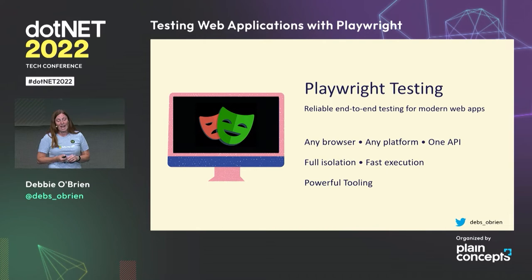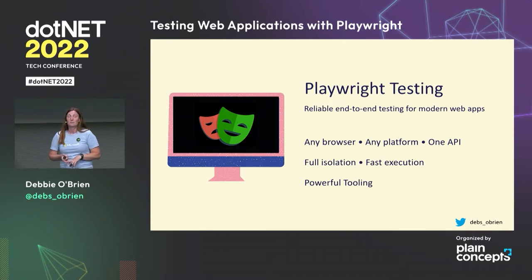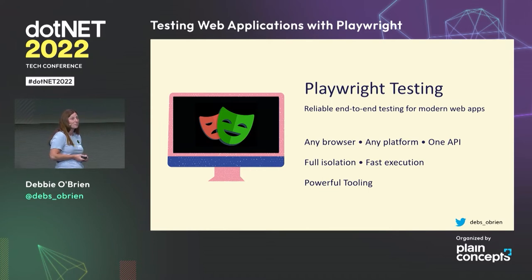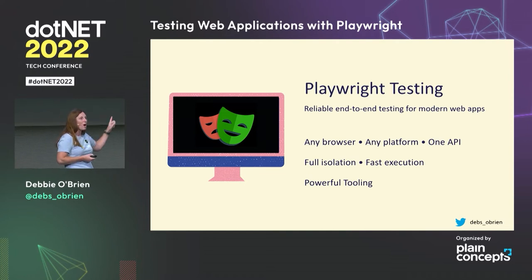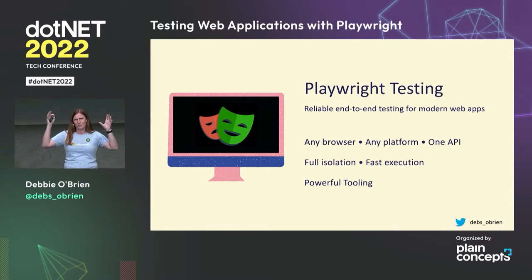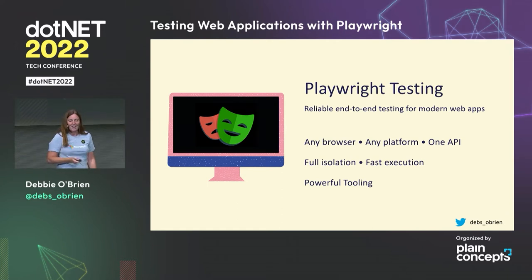Playwright testing is reliable end-to-end testing for modern web apps. It runs on any browser — Chromium, WebKit, Firefox. It doesn't matter if you're on Windows or Mac. Any platform, one API, full isolation, fast execution, and very powerful tooling. I'm going to talk to you today about the powerful tooling and show you how powerful Playwright is. My aim is that at the end, you're all going to put your hands up saying you'll use Playwright.